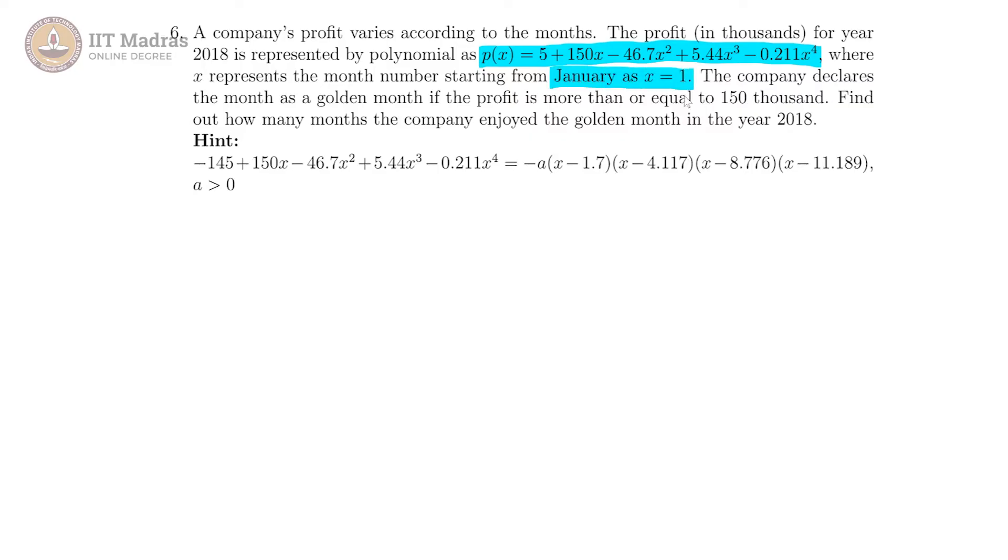January is x equal to 1. The company declares the month as a golden month if the profit is more than or equal to 150,000. So golden month is when p of x is greater than or equal to 150.